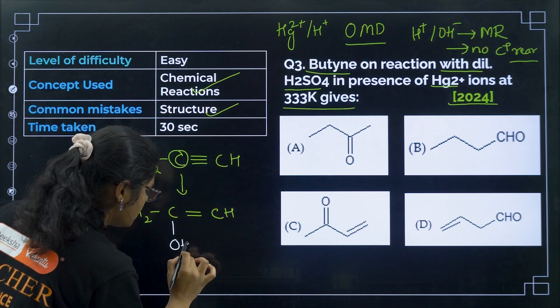Question 8 from 2022: which test differentiates between pentan-2-one and pentan-3-one? Pentan-2-one has the CH₃CO group, which gives a positive iodoform test (yellow precipitate). Pentan-3-one does not have the CH₃CO group. So the iodoform test can easily distinguish between them. The correct answer is option number B.